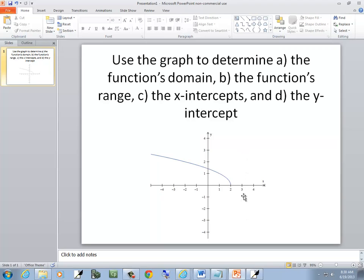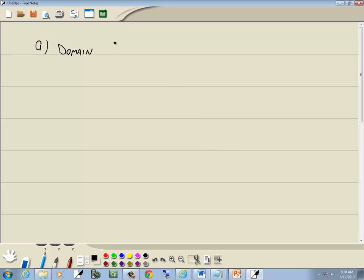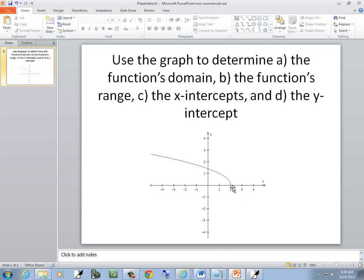If I go up or down, I don't find my graph anywhere. So our domain will be from negative infinity to 2. And it will be a bracket on 2. If you don't have an open circle, it's automatically a bracket.